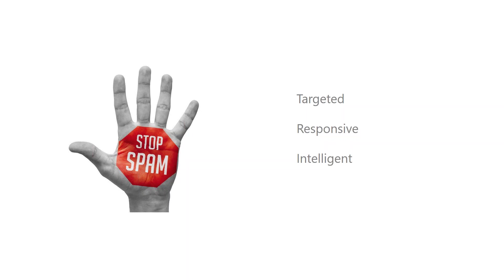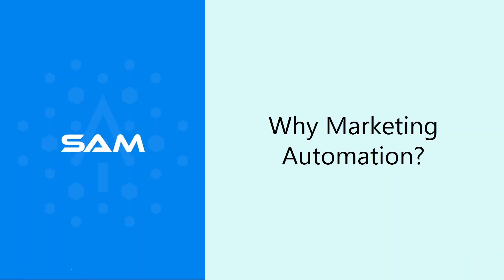At its basic, marketing automation allows you to get better at building relationships through email because you're taking time in advance to develop the types of messages you want for people who fit within the criteria you set up. There are several marketing automation systems — some complex, some not. I'm happy to be working with Roz at SAM.ai, where the interface is really quite easy. Now that we've set the tone on what marketing automation is, I'm going to hand it to Roz, the founder and mastermind behind the product SAM, to talk about why we want to start considering marketing automation.